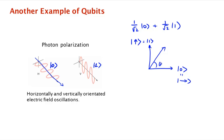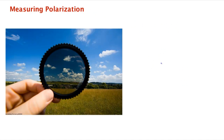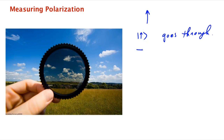How do you measure the polarization of a qubit? You use a polarizing filter — a polarizing lens, the same kind you might have in your sunglasses. The filter has a certain orientation. For example, a vertically oriented filter transmits photons that are vertically polarized and blocks photons that are horizontally polarized. So it's performing a measurement.